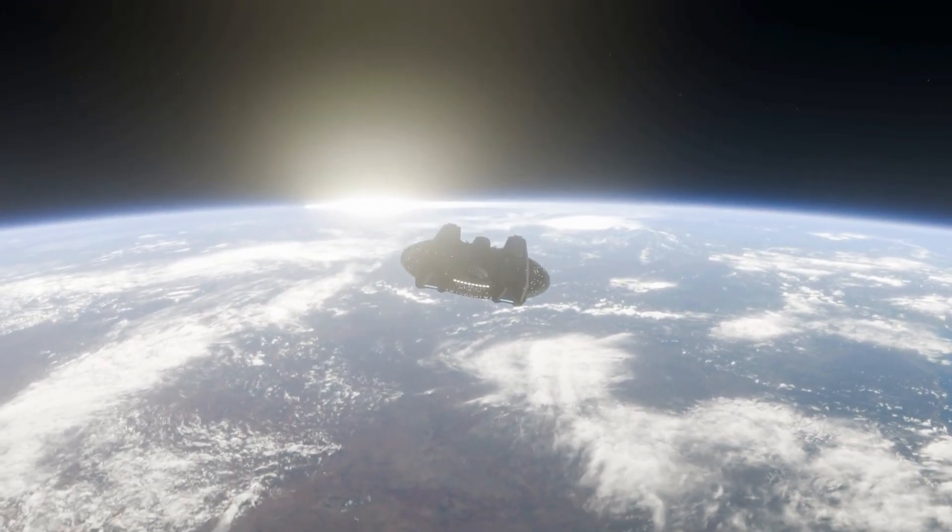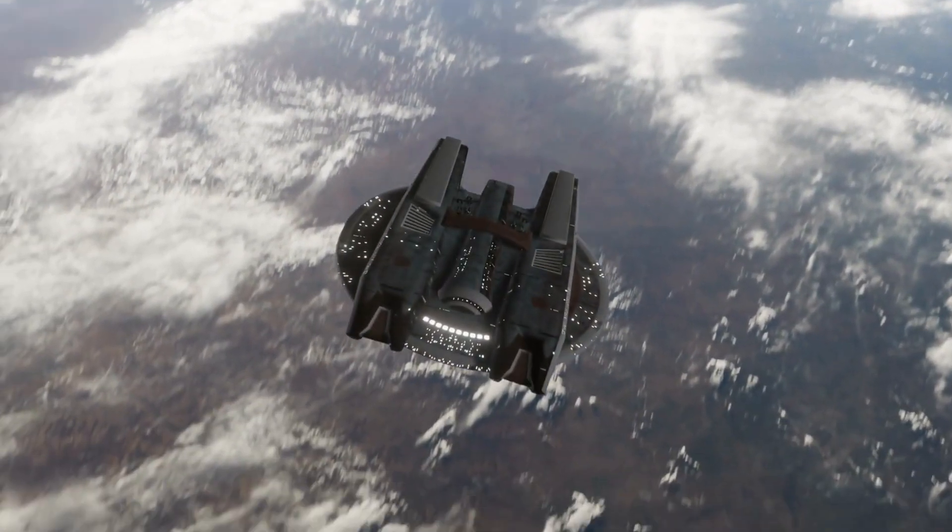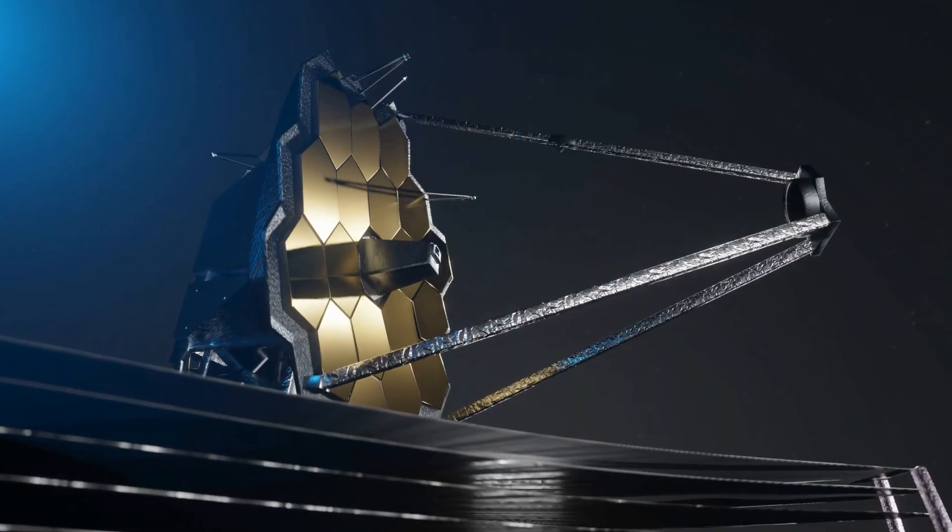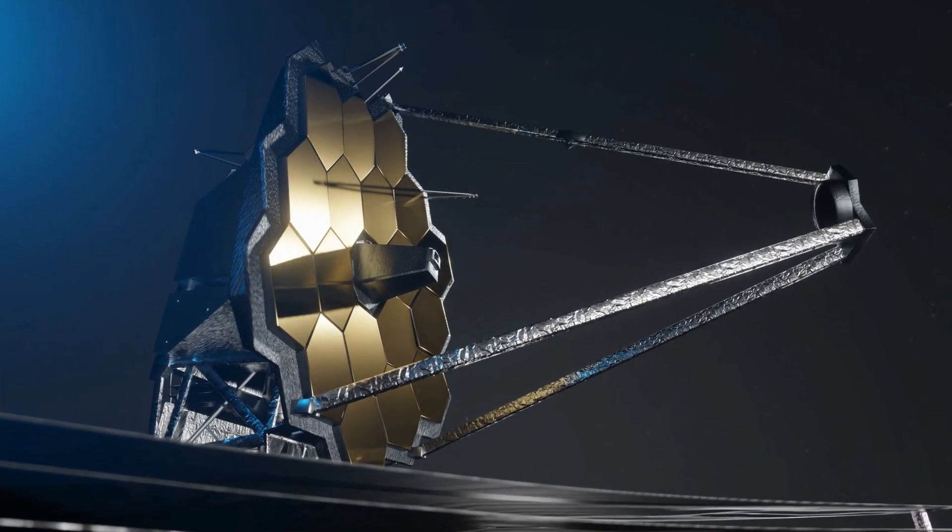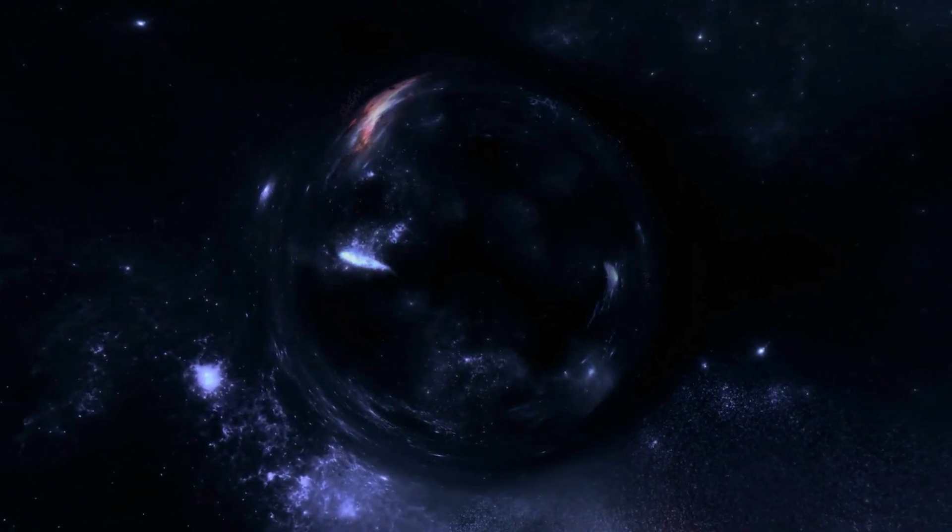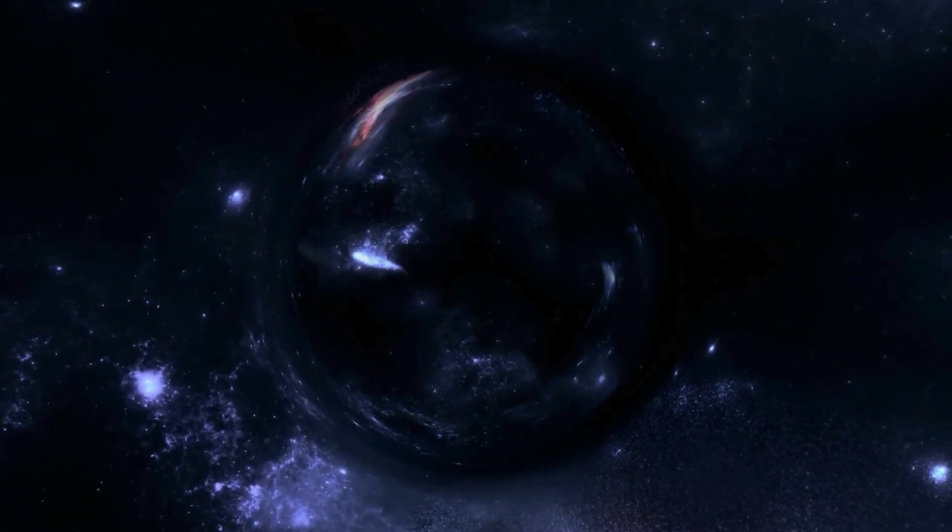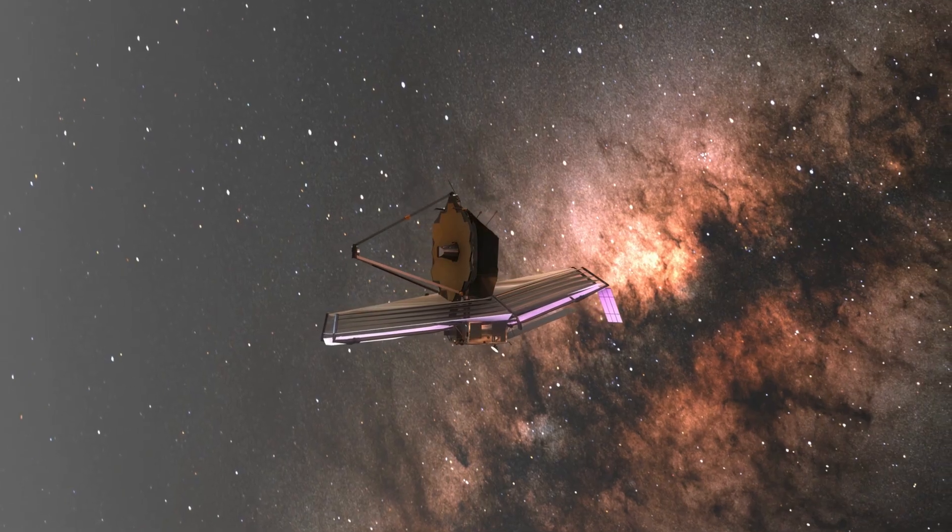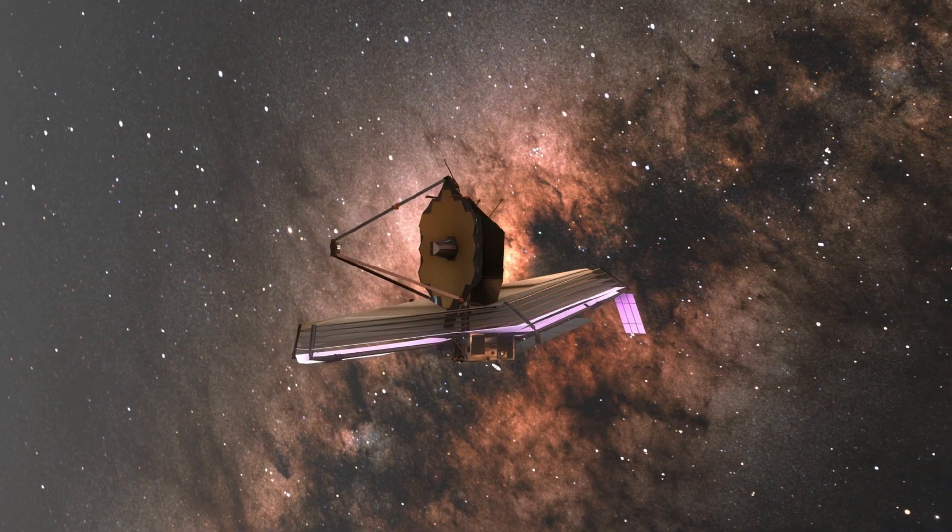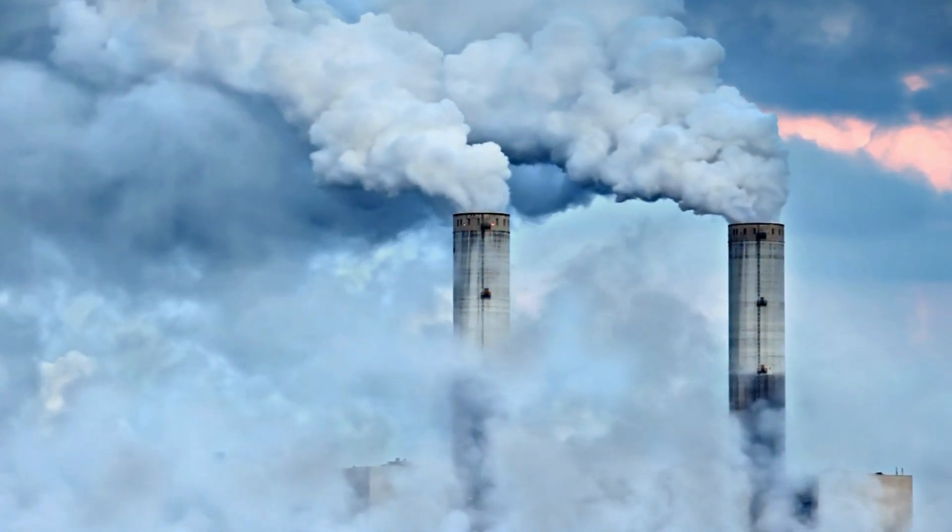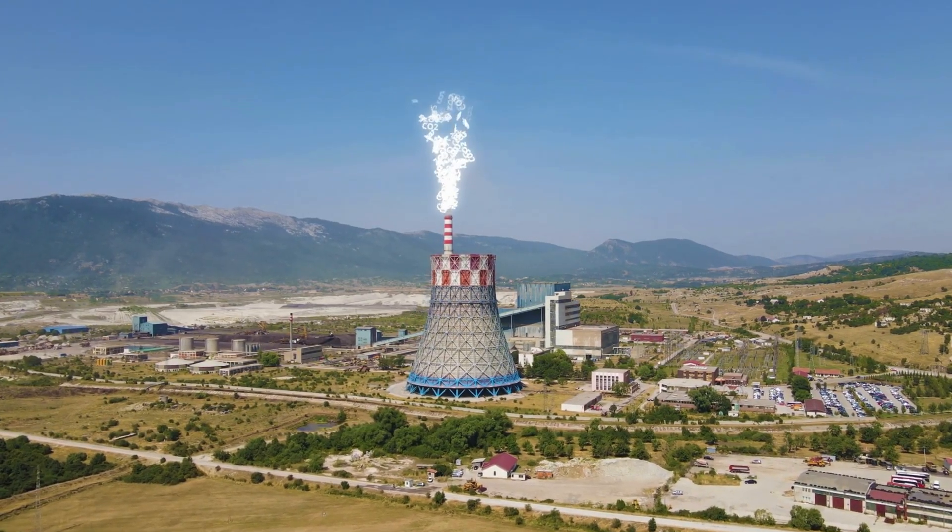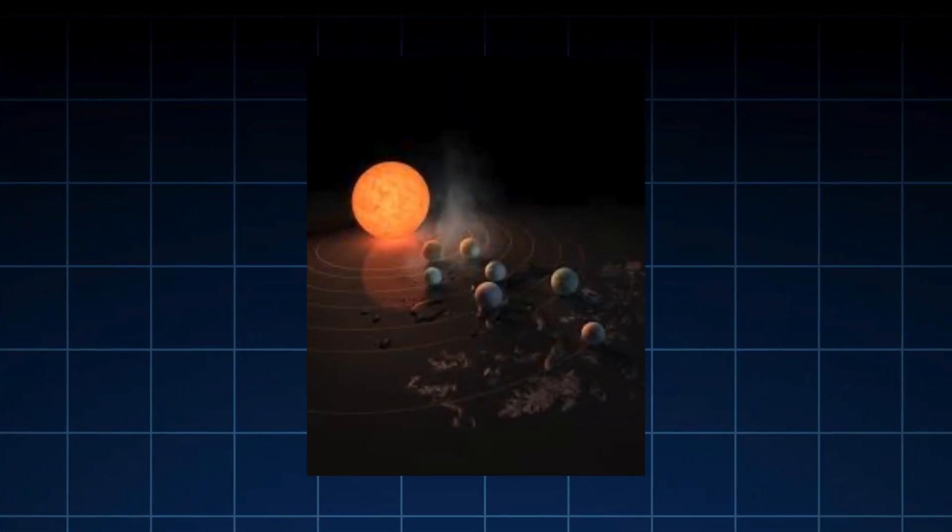We might not know until the proposed Habitable Worlds Observatory, launching in 2041 to search for life around sun-like stars. Until then, James Webb's observations are our best hope. Measuring light absorbed by a thin gaseous layer around a rocky planet 40 light-years away is incredible. Scientists haven't given up. They've refined techniques using initial JWST data for greater precision. With ongoing 2025 transit observations, they aim to confirm carbon dioxide and a secondary atmosphere, a key step in the search for life on 1e.